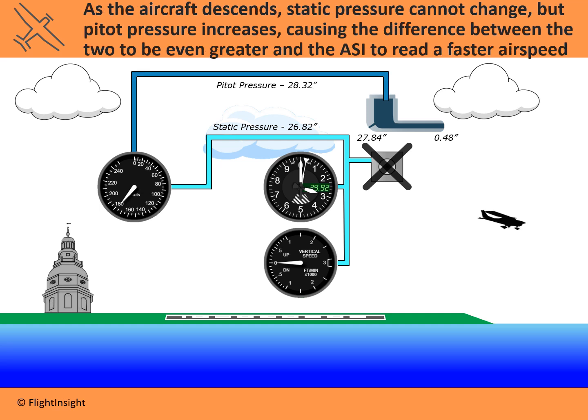So let's say the aircraft descends, getting into higher pressure air. Now the pitot tube is not blocked. We're going the same speed and have that same roughly half an inch of ram air pressure — 0.48 inches. But now that we've descended, the ambient atmospheric static pressure will have increased, jumping up to 27.84 inches where before it was 26.82. Because the static port was blocked at 3,000 feet, as we descend it's not going to register that increase in pressure. The static pressure system will still be stuck at 26.82, so the altimeter and the vertical speed indicator won't register any change in altitude.